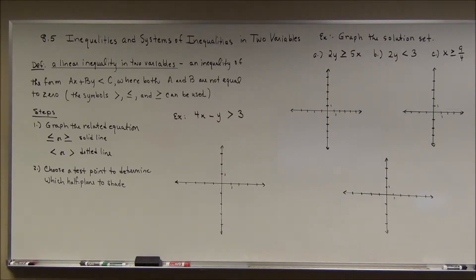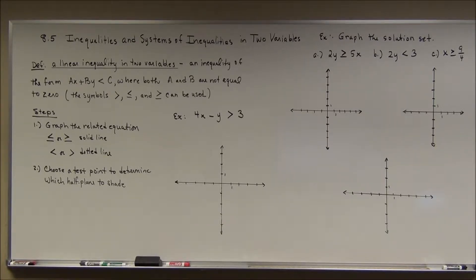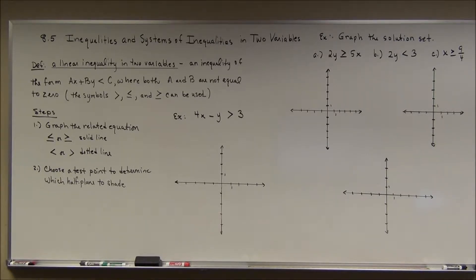We're going to get started in section 8.5, Inequalities and Systems of Inequalities in Two Variables. We're going to try to lump together in this one section what would have probably taken a whole chapter in your Algebra 2 class. But we're going to start off with the simplest of the linear inequalities — linear inequalities in two variables.